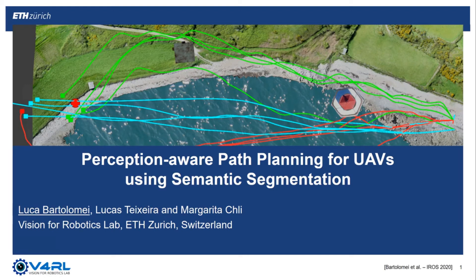Hi, I'm Luca Bartolomei from Vision for Robotics Lab at ETH Zurich. In this work we present a perception-aware path planning strategy for unmanned aerial vehicles using semantic segmentation.